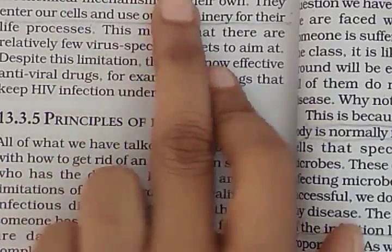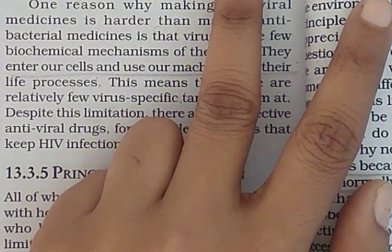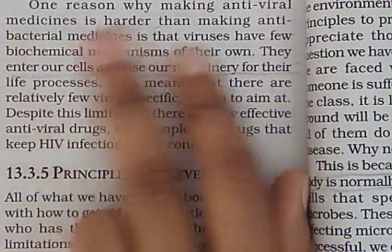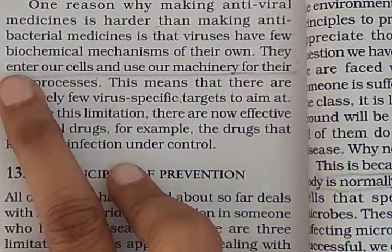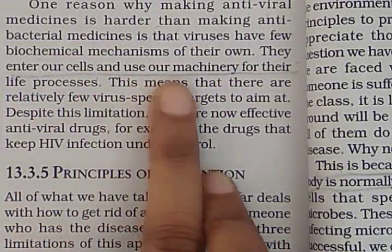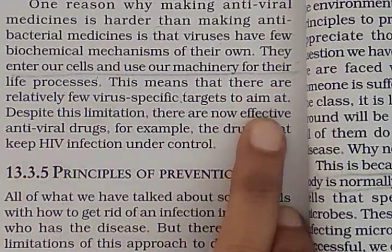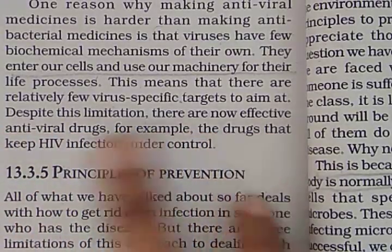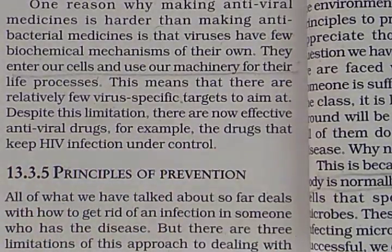Making antiviral medicines is harder than making antibacterial medicines. Viruses have few biochemical mechanisms of their own — they enter our cells and use our machinery for their life processes. This means there are relatively few virus-specific targets to aim at. Despite this limitation, there are effective antiviral drugs available. For example, drugs that keep HIV infection under control.